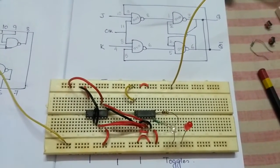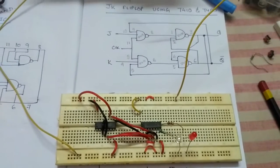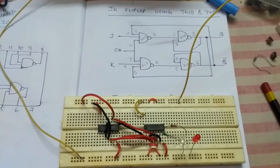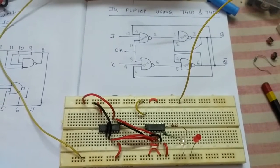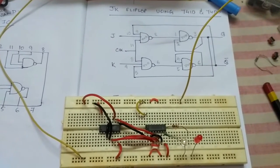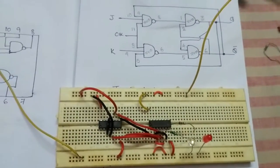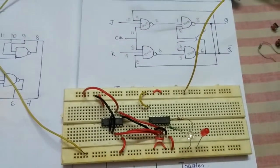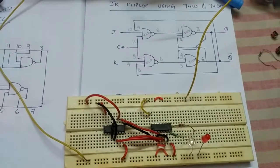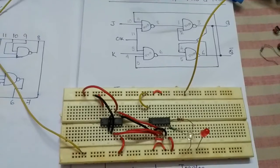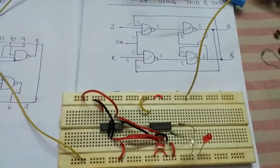Hello everyone, welcome back to my YouTube channel Victoria Physics. Today we will do JK flip-flop using 7410 IC and 7400 IC. The 7410 IC is a three input NAND gate and you all know 7400 IC is a normal two input NAND gate.